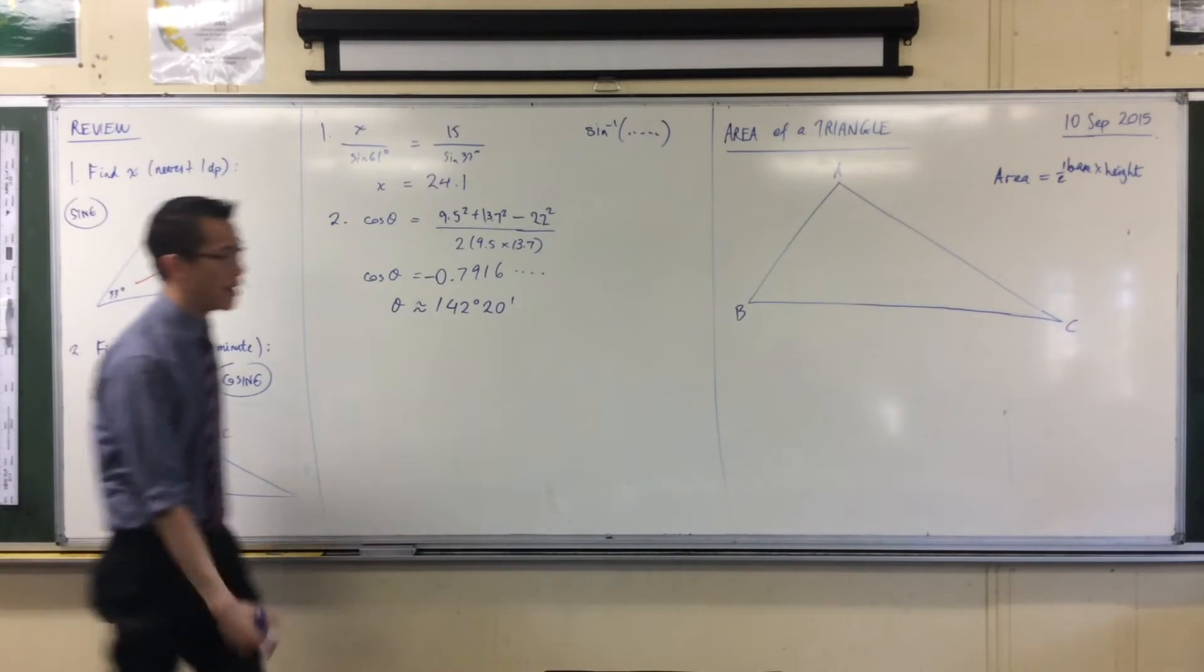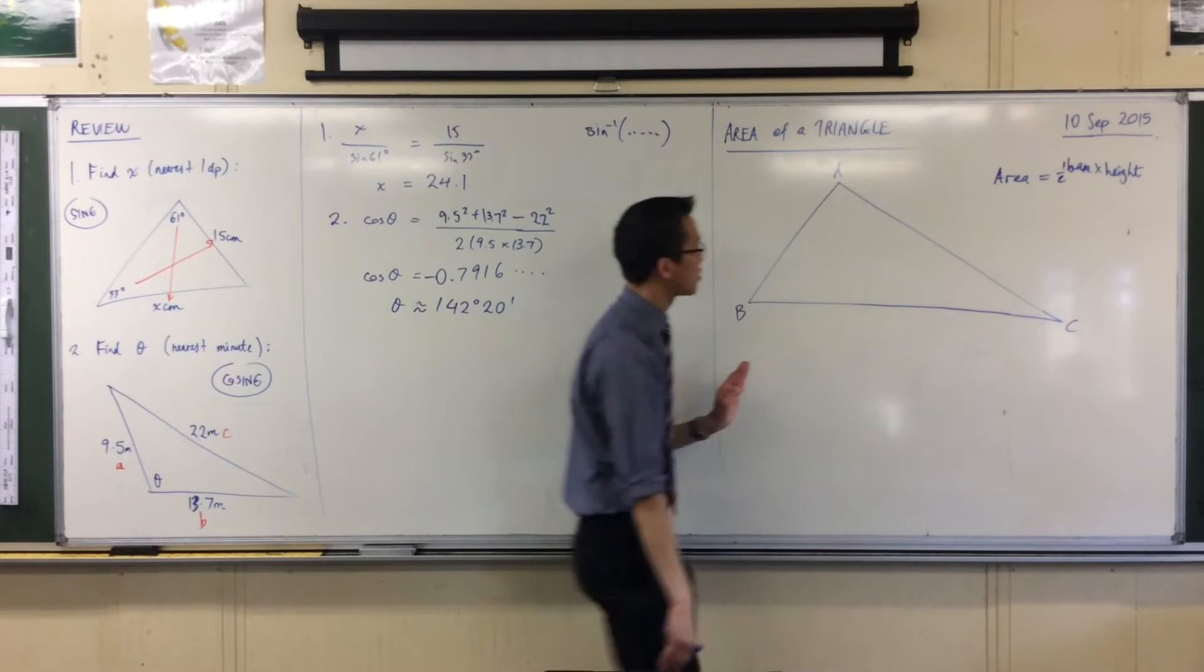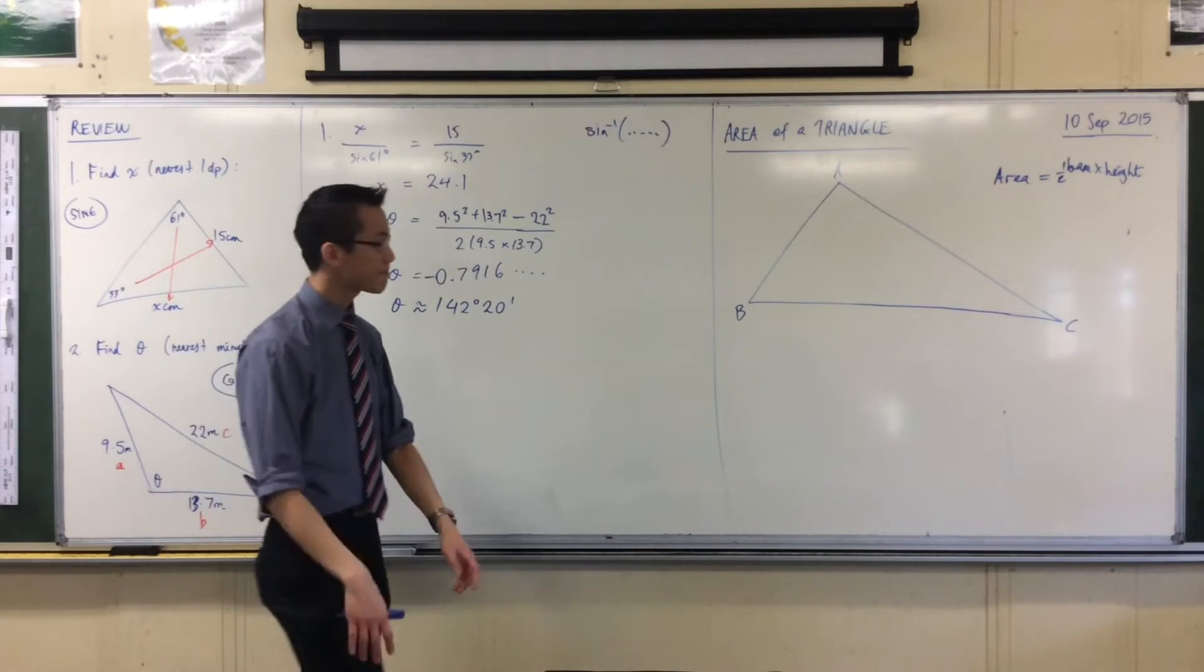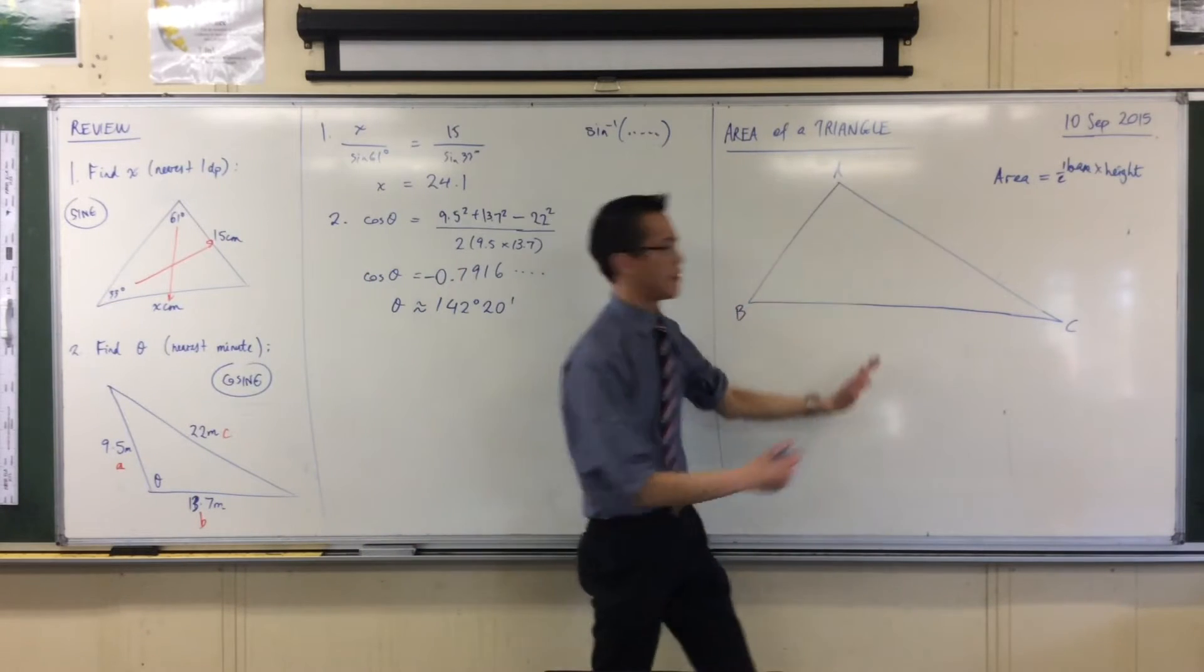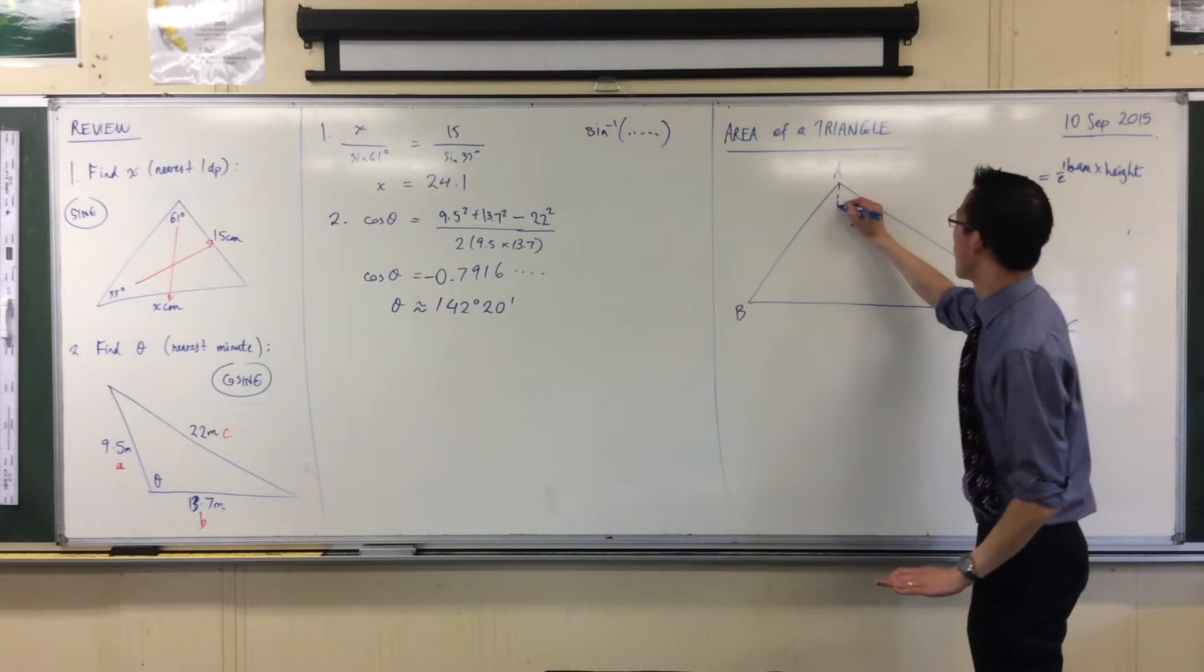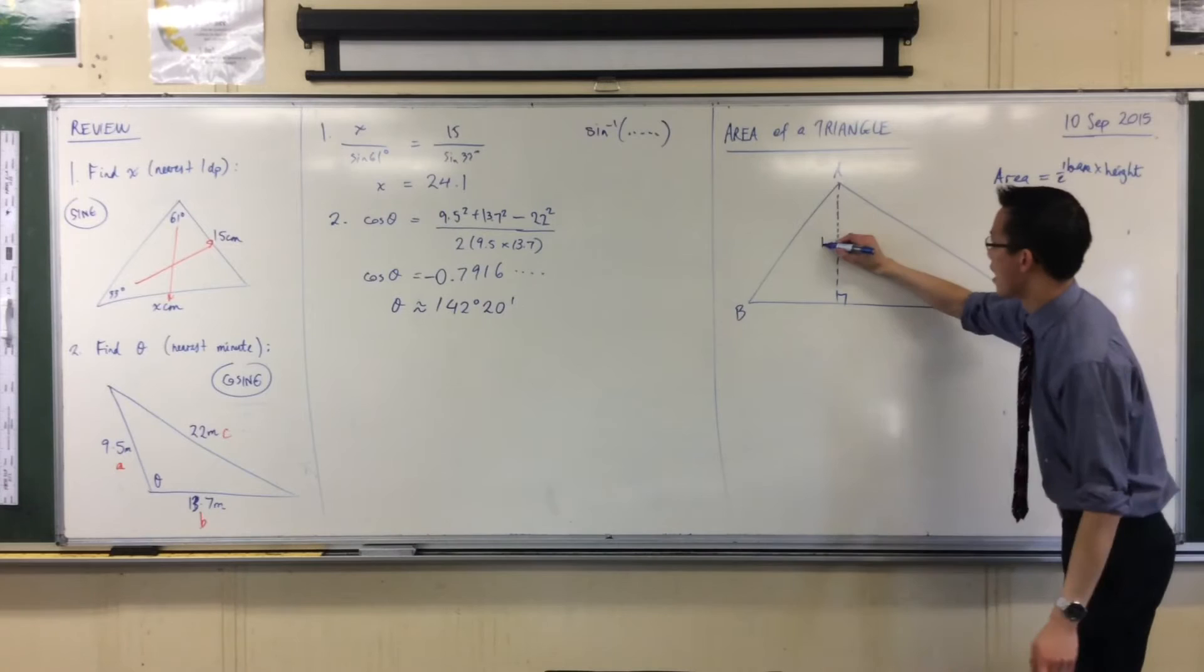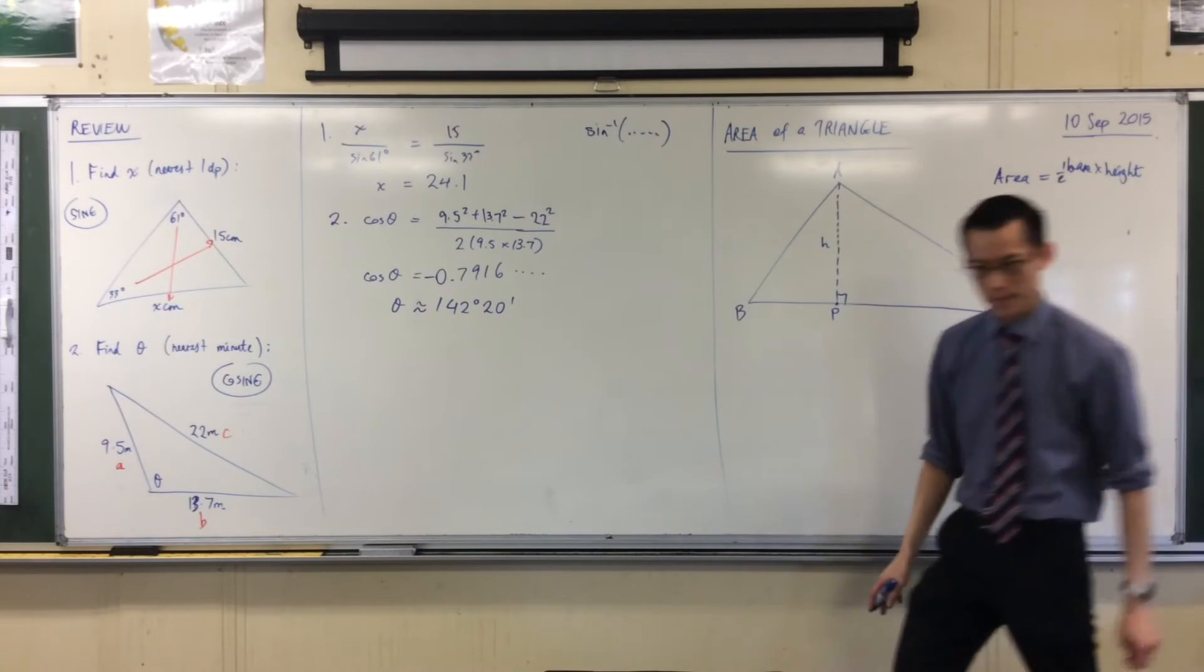You'll need some information here. For instance, you might call BC your base. In which case, where might the height go? We actually have a word for this. It's going to be the perpendicular here. We call it the altitude. So I'm actually going to draw that in. It's got to be perpendicular in order for that to be the height. I'll call that H and I'll call this point that I've just made down here P for point.